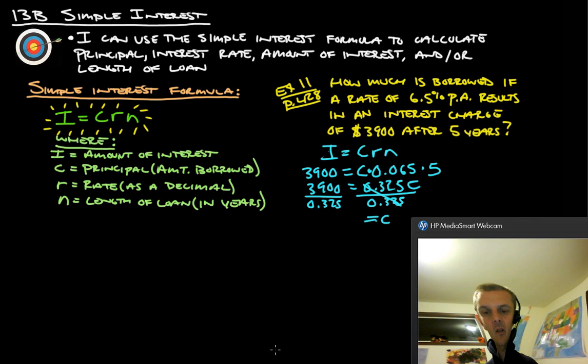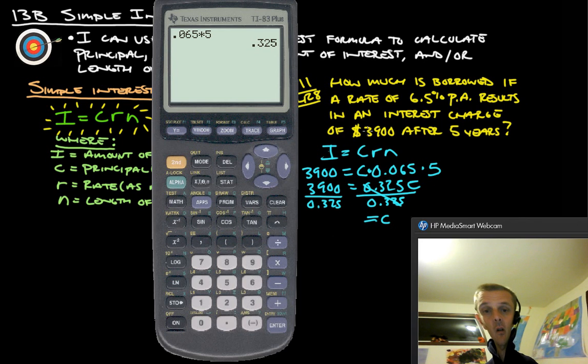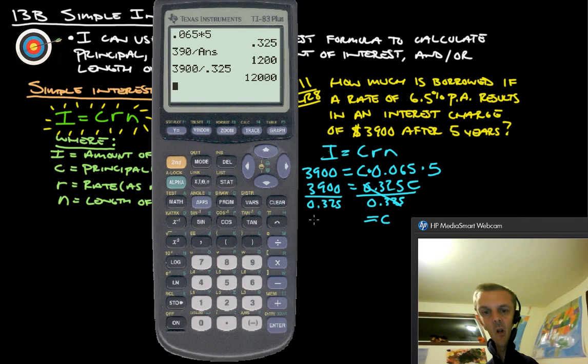And our C is going to be our original investment or how much we borrowed. So, we're going to take 3,900 and divide by 0.325, or in this case we just do second answer because that's what we just had from before. And we get, oops, I was supposed to do 3,900. Let's try that again. 3,900 divided by 0.325. And we get 12,000. So, the original amount borrowed was 12,000.